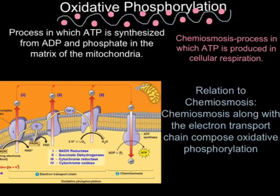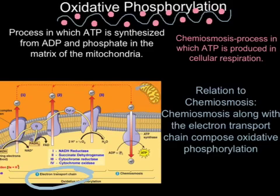There is the relationship between the two. So that means: the electron transport chain, which is all of this, plus chemoosmosis, which is just this, equals oxidative phosphorylation.